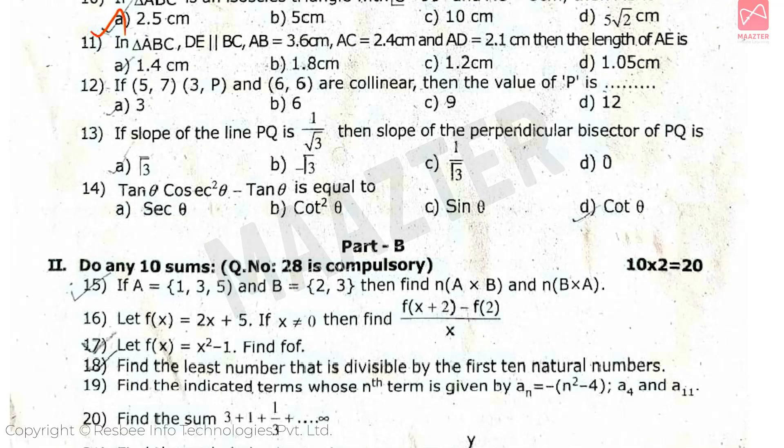In triangle ABC, DE parallel to BC and AB = 3.6cm, AC = 2.4cm and AD = 2.1cm, then the length of AE is, answer is Option A. Next, if (5, 7), (3, P) and (6, 6) are collinear, then the value of P is, answer is Option C.